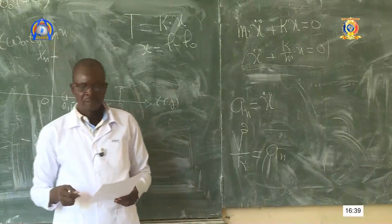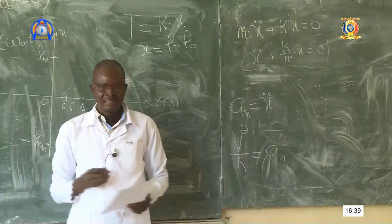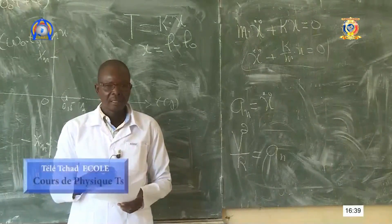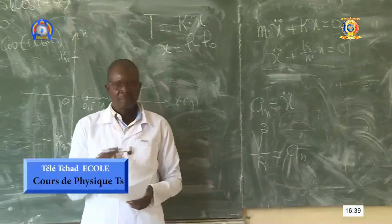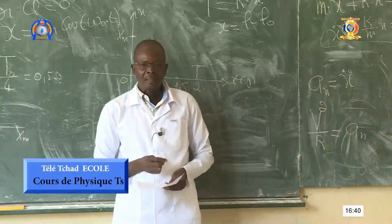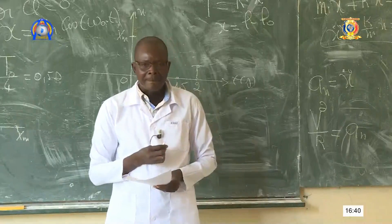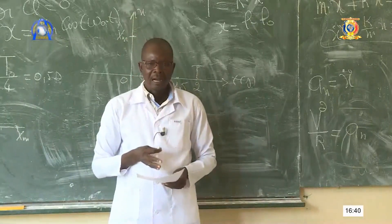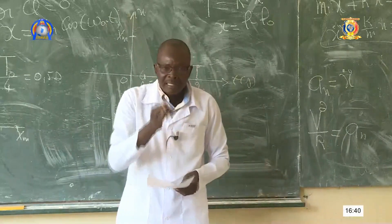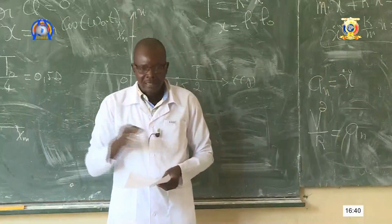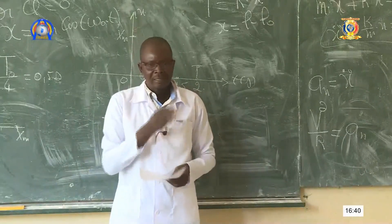La cinquième question est une suggestion : à la fin du chapitre, peut-on donner des séries d'exercices ? Oui, quand on aura fini ce chapitre, je mettrai à votre disposition des exercices à traiter. La dernière question : un candidat souhaite que j'explique l'électricité. Nous sommes encore en mécanique. Après les oscillateurs mécaniques, nous allons entamer l'électricité, et le premier chapitre sera les oscillateurs électriques libres.